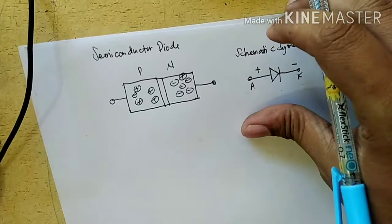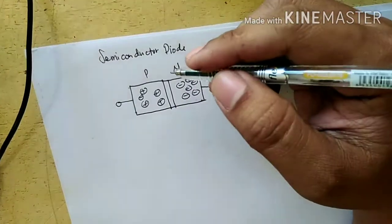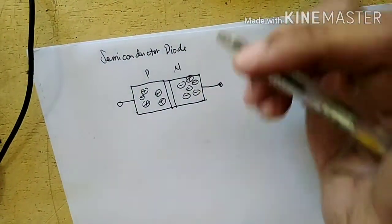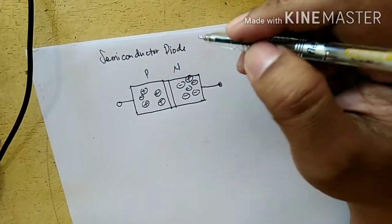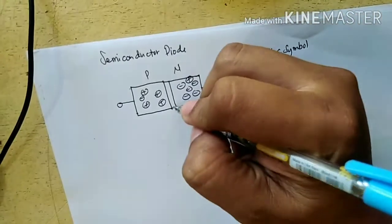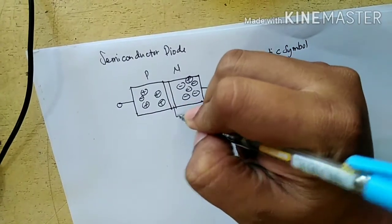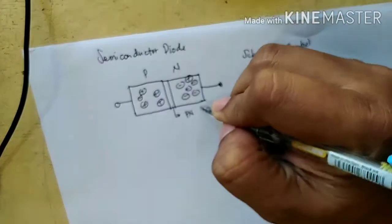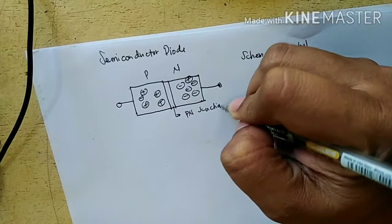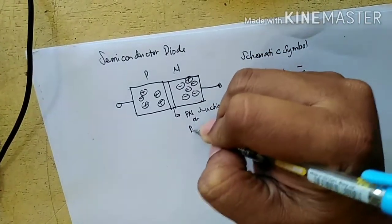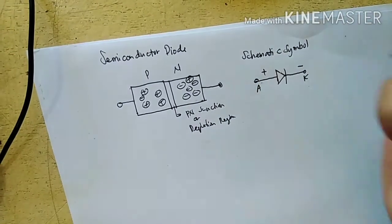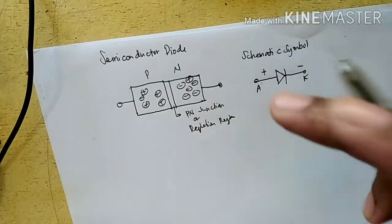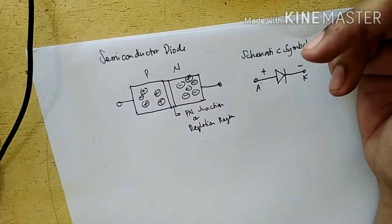When you join a P-type material and N-type material, a depletion region or a P-N junction is formed. This is the P-N junction or the depletion region. So if you join the P and the N-type material, it becomes a semiconductor diode.